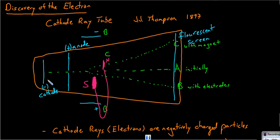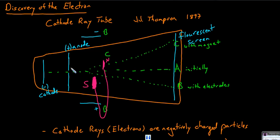The cathode was negatively charged and would expel cathode rays — these green particles here — towards the positively charged anode. One could surmise that these cathode rays might be negatively charged because they're expelled from this negatively charged electrode and they're attracted to the positively charged anode.